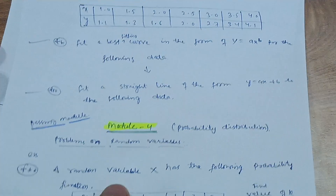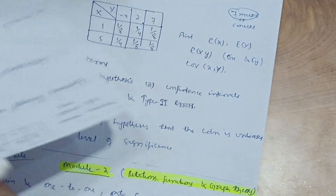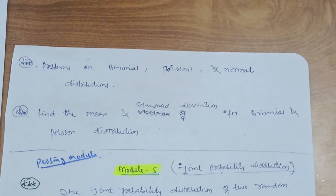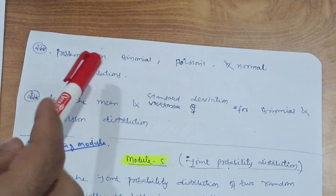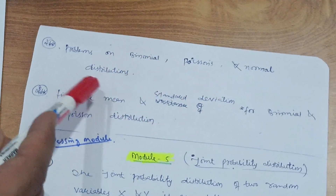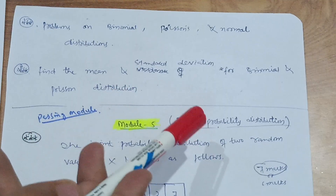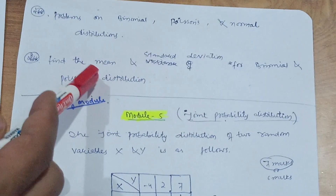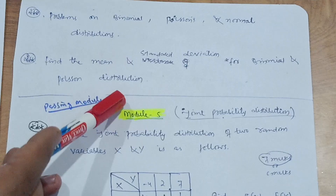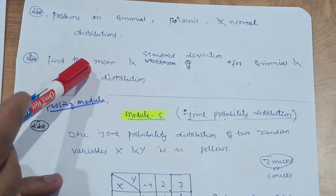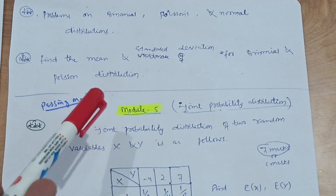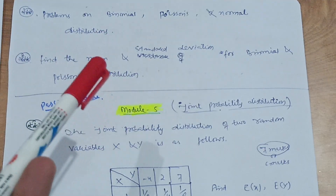Also in Module 4, you have to solve problems on binomial, Poisson, and normal distributions. Two derivations are in the syllabus — one that will definitely appear is finding the mean and standard deviation for binomial and Poisson distributions. This content is enough for Module 4. If you are comfortable with this module, go through it fully and you can make 20 marks with ease.